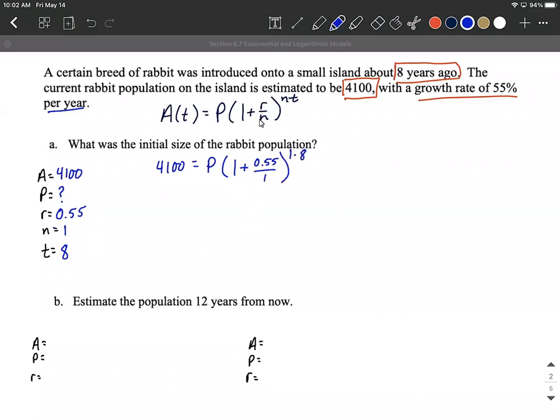So filled in everything into our formula for compound interest up here at the top. You'll notice that we still don't know what P is, so we should probably do a little bit of work and find what P is.